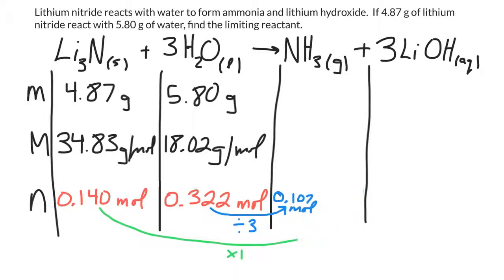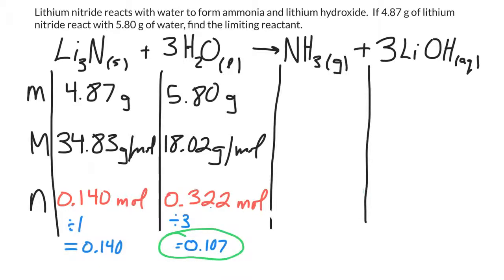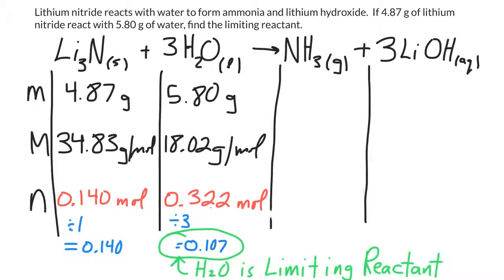Now I'm going to show you the shortcut way. Once you have the number of moles of both reactants, here's something simple you can do: divide each mole amount by its coefficient. So divide the lithium nitride mole amount by 1 and the water mole amount by 3. Whichever number is smaller tells you your limiting reactant. So we can confirm: water is the limiting reactant.